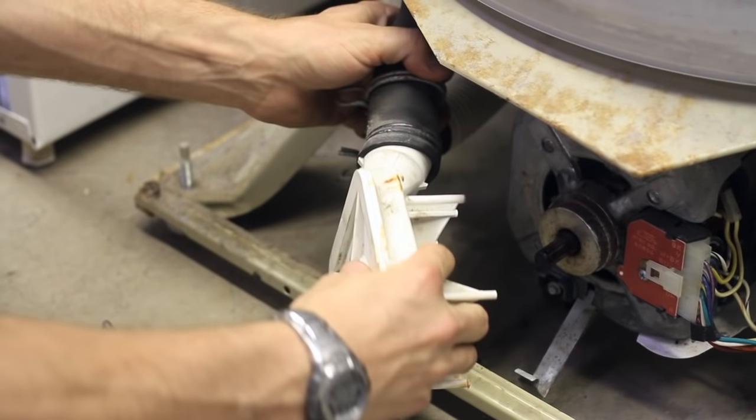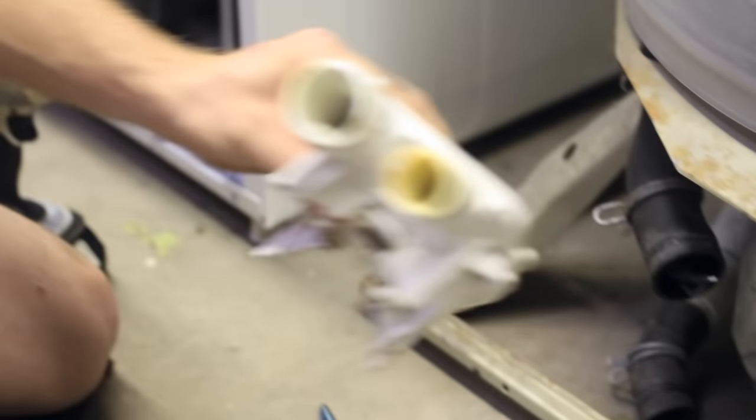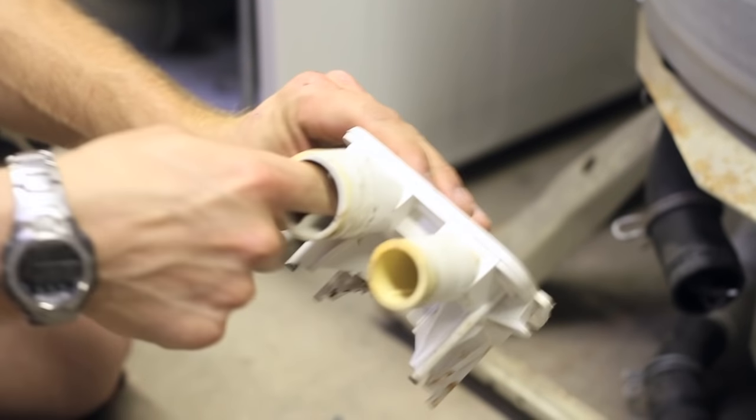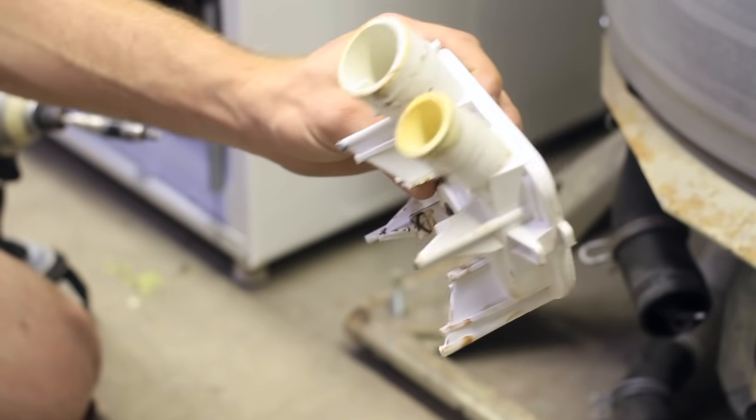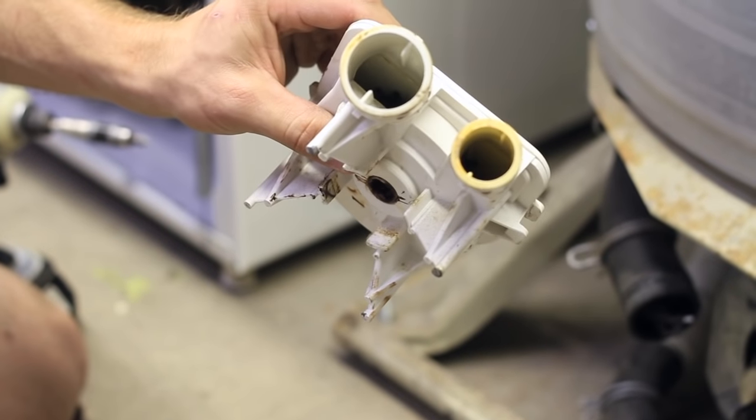Once those are removed, the drain pump will come off the motor shaft. You can then pull it out and look inside of here, and there's usually a bobby pin or a nail that's going to be rubbing along that metal snubber inside of there that causes the water to drain.